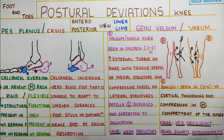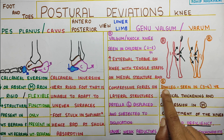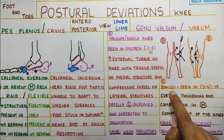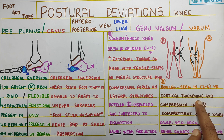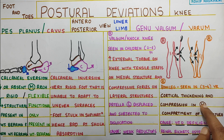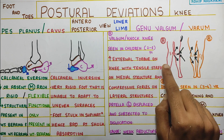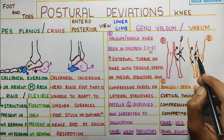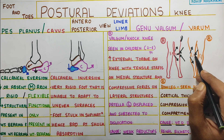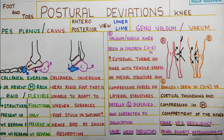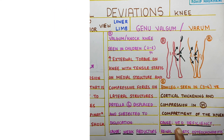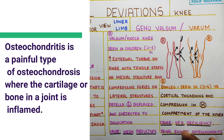Moving on to genu varum, also called bow legs, which is commonly seen in children around three to four years. This causes cortical thickening and compression in the medial region — exactly opposite of valgum. It causes compression in the medial aspect and distraction in the lateral aspect. This is commonly seen in osteoarthritis, vitamin D deficiency, renal rickets, and osteochondritis.